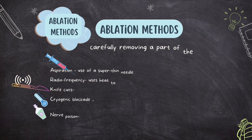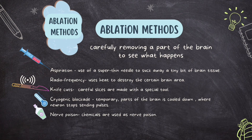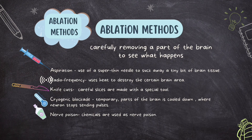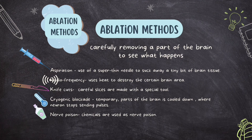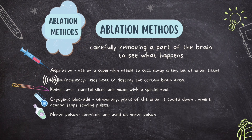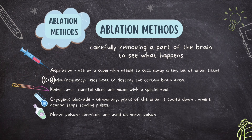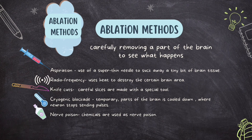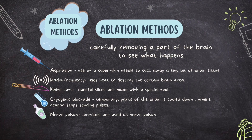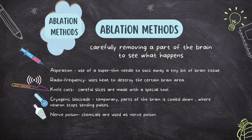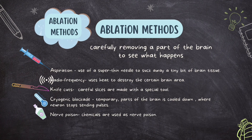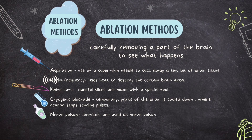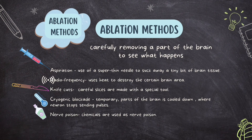The first method we'll discuss is the ablation method. It sounds complex, but it's basically about carefully removing a part of the brain to see what happens. Both ablation and lesion methods involve cutting a part of the brain to learn more. With ablation, they don't just cut — they also destroy a bit of brain tissue, then observe how behavior changes. The area removed is called a lesion — like a little brain injury. It's all about understanding how the brain works.